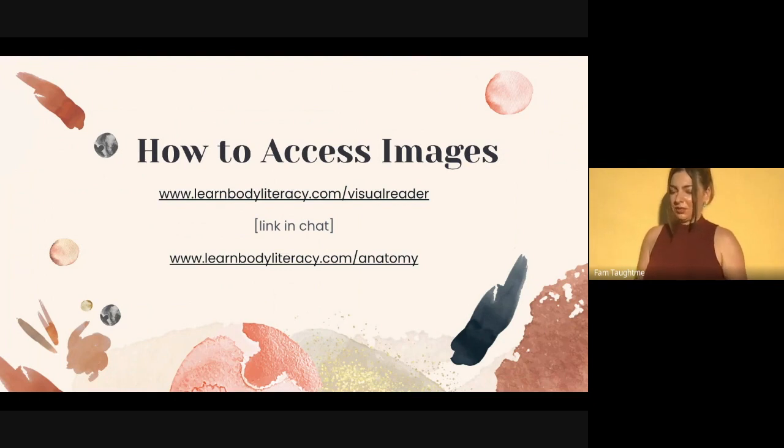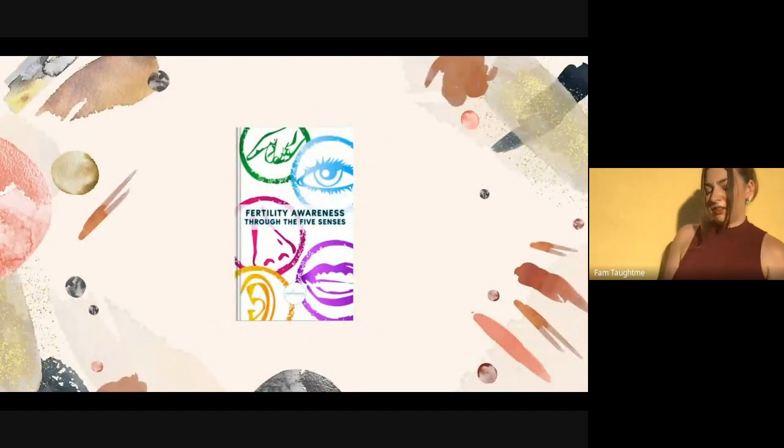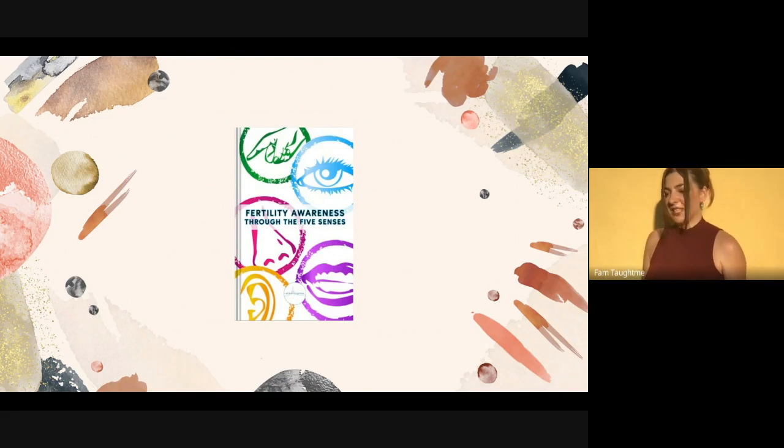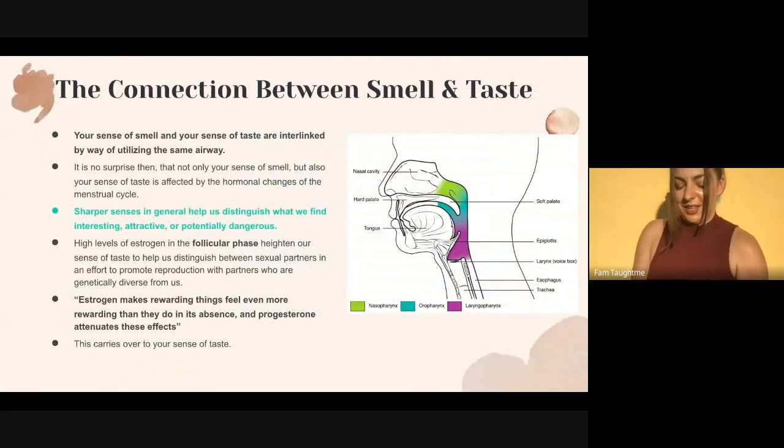You can access reference images at learnbodyliteracy.com/visualdrawings. This class comes out of my book called Fertility Awareness Through the Five Senses, about learning how to observe your fertility signs and menstrual cycle changes through your senses. I wanted to teach a class that used art to talk about this concept of sensory connection between you and your body, using your menstrual cycle as a vital sign.